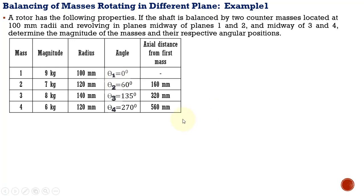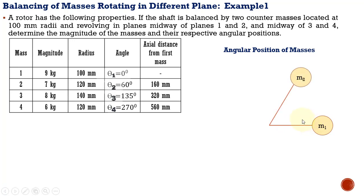Now let us see how to construct the angular positions of the masses. Mass one is considered the reference, lying along the horizontal axis at zero degree. Mass two is located 60 degrees from mass one. We need to be very careful: we must select either the clockwise or counter-clockwise direction consistently.